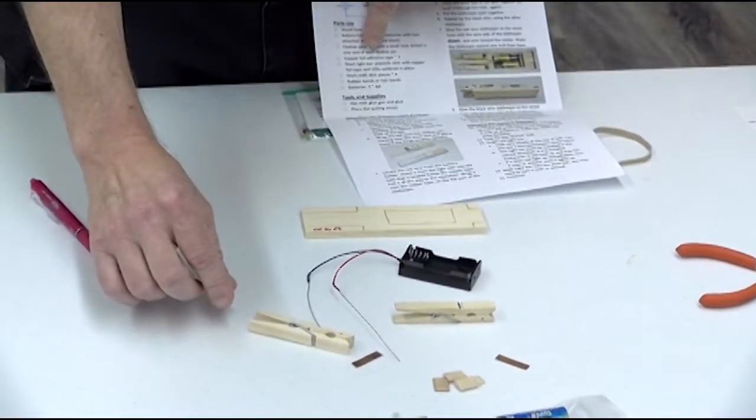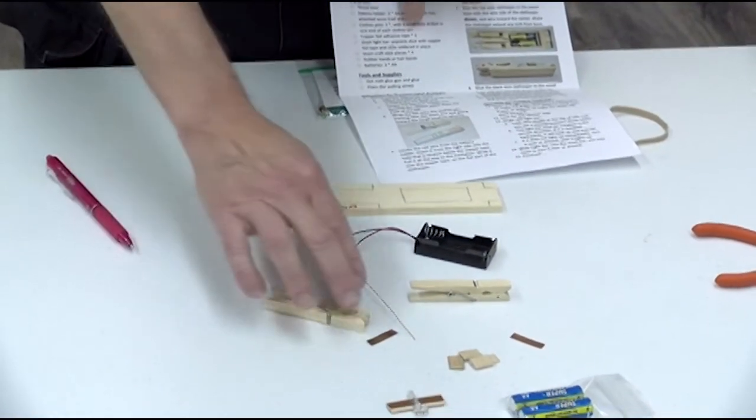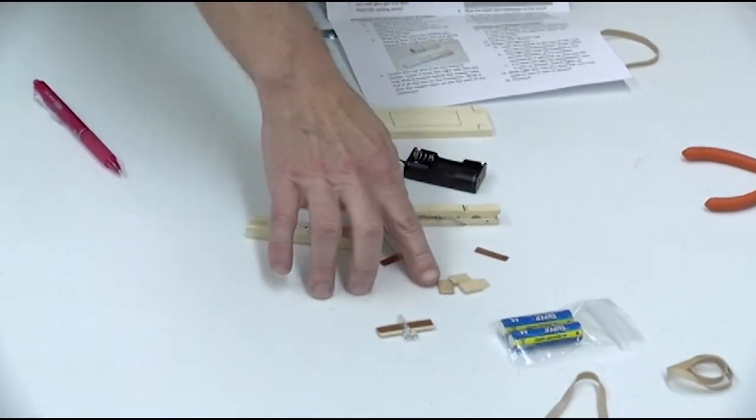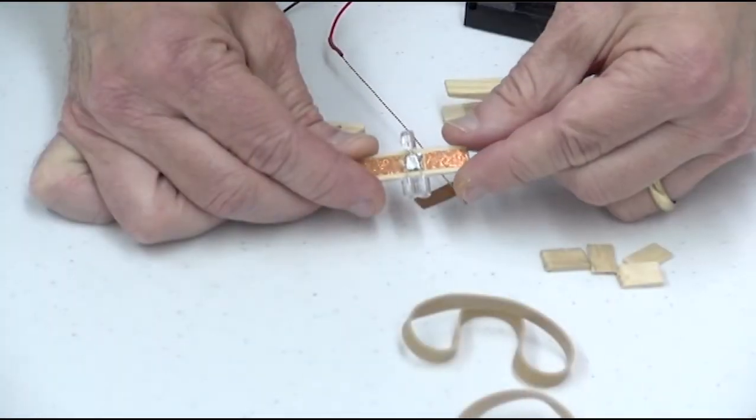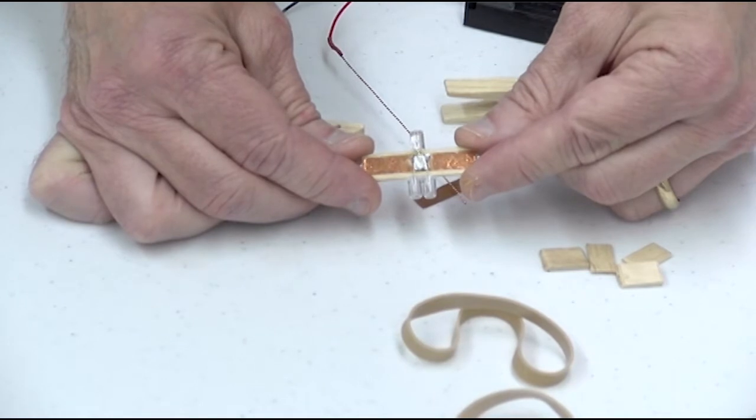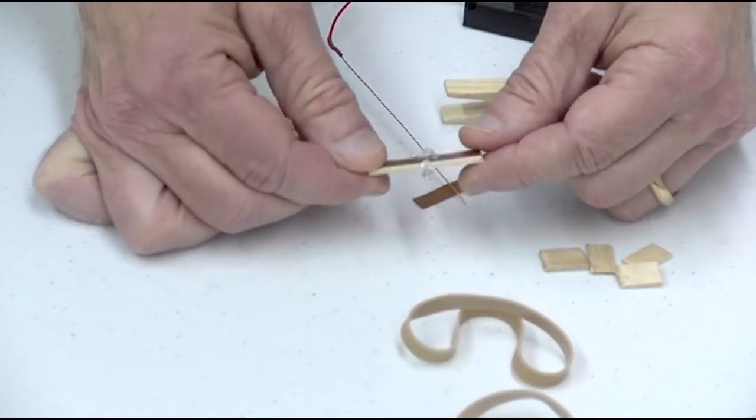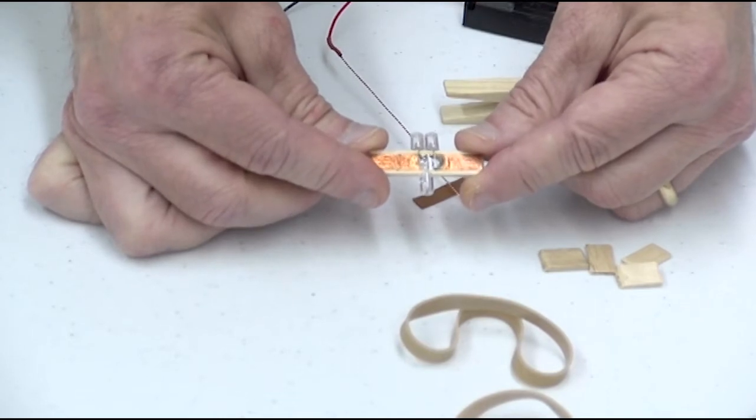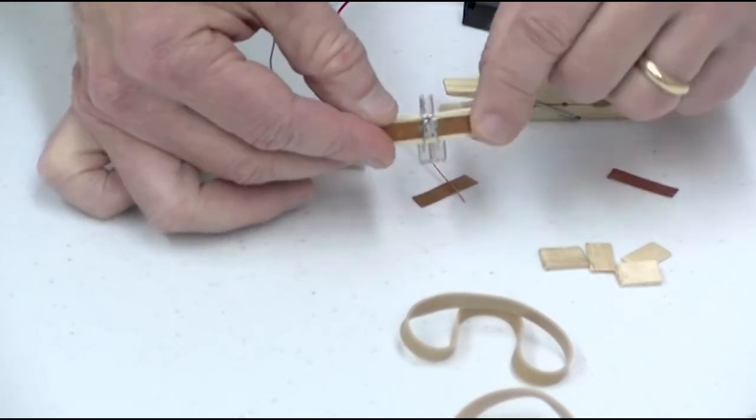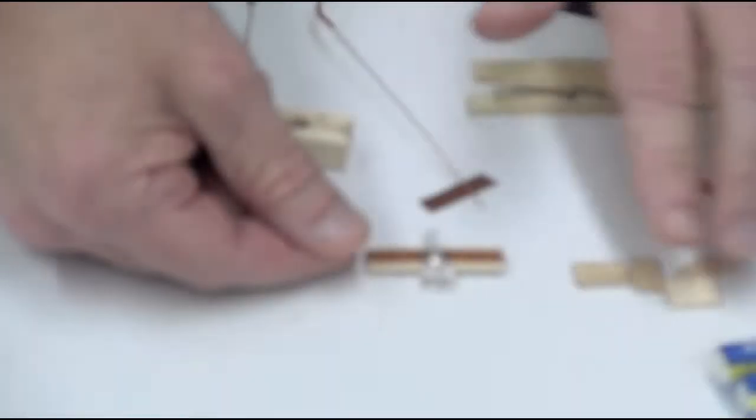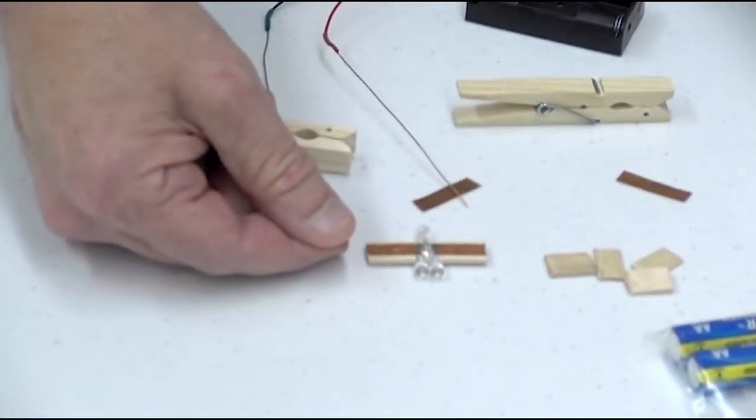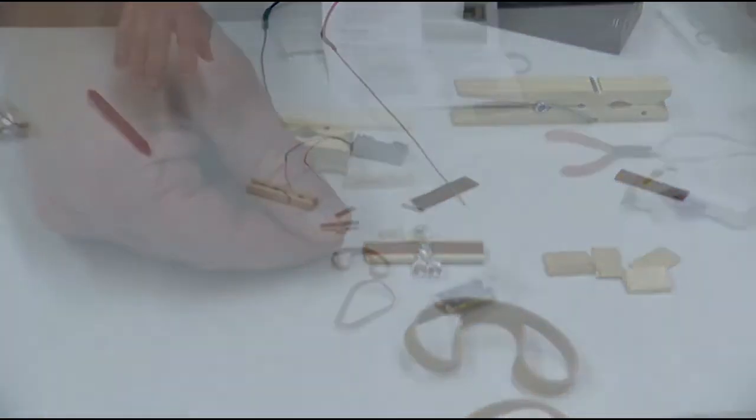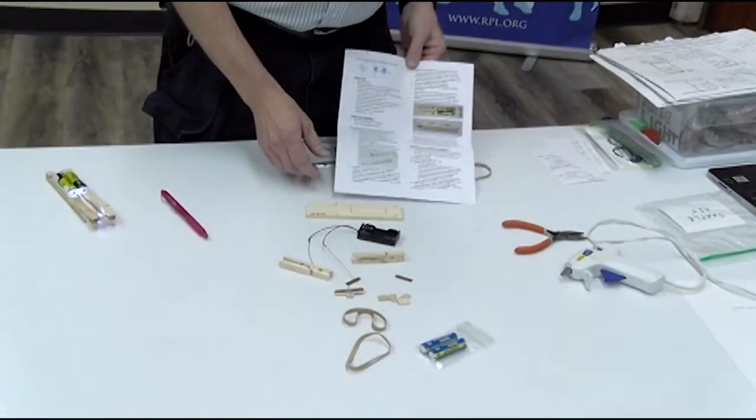The next item on our list is the copper foil adhesive tape which I've just talked about. Then the short light bar which looks like this. It has one LED on one side and two LEDs on the other. It has copper on both sides of the light bar. You should also have four very small pieces of craft stick and a couple of rubber bands and some batteries.